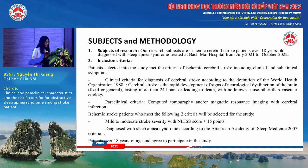Inclusion criteria: patients selected into the study met the criteria of ischemic cerebral stroke including clinical and subclinical symptoms. Clinical criteria for diagnosis of cerebral stroke follow the World Health Organization 1988 definition: cerebral stroke is a rapid development of signs of neurological dysfunction of the brain, focal or general, lasting more than 24 hours or leading to death with no known cause other than vascular etiology. Paraclinical criteria: computed tomography or magnetic resonance imaging with cerebral infarction.